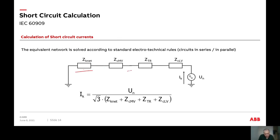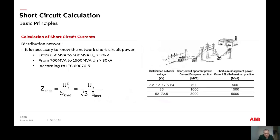We have converted the medium voltage cable, transformer, and LV cable to their equivalent impedances. To find the short circuit current after the LV cable, we use Ohm's law: current equals the secondary voltage divided by root three (three-phase system) and the sum of all impedances. This is very simple — not rocket science. For the distribution network, we can find the impedance based on the network voltage and rated current, or based on power if the current is unknown.